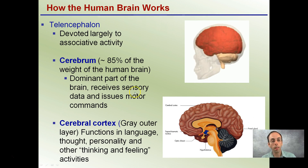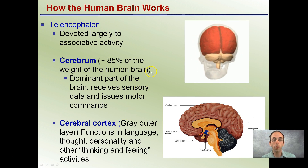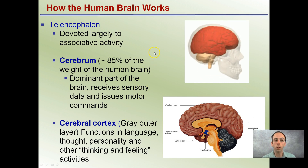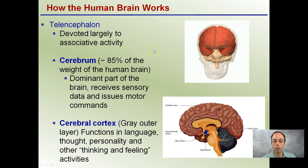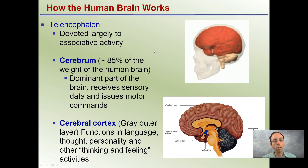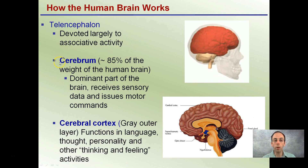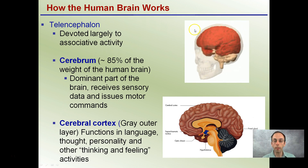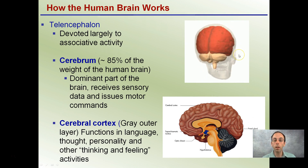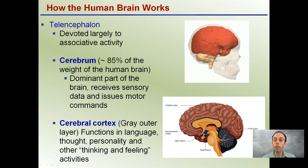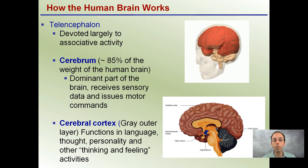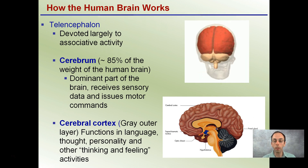The telencephalon is a region of the brain that's devoted largely to associative activity. The cerebrum is about 85 percent of the weight of the human brain. It's located here in red and highlighted so you can have an idea of just how large it is and also where it's located. This is the dominant part of the brain and receives sensory data and issues motor commands.